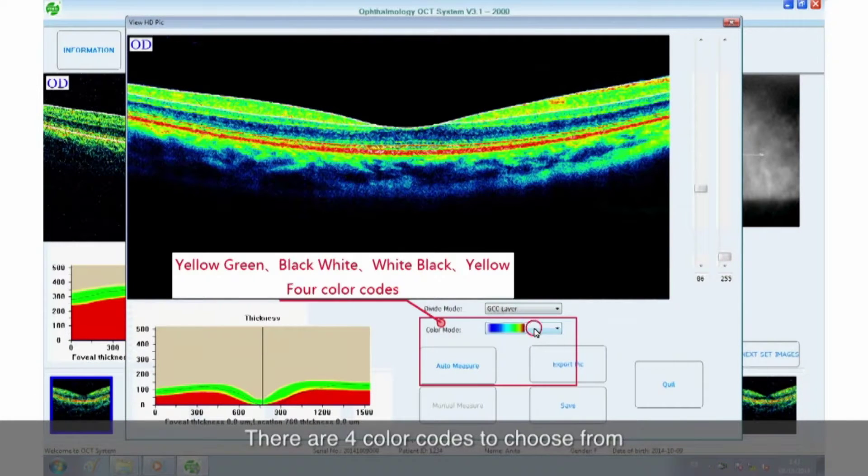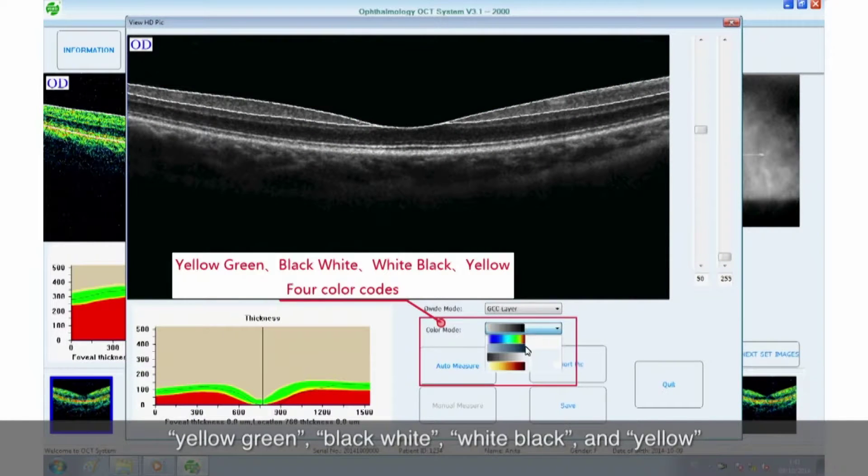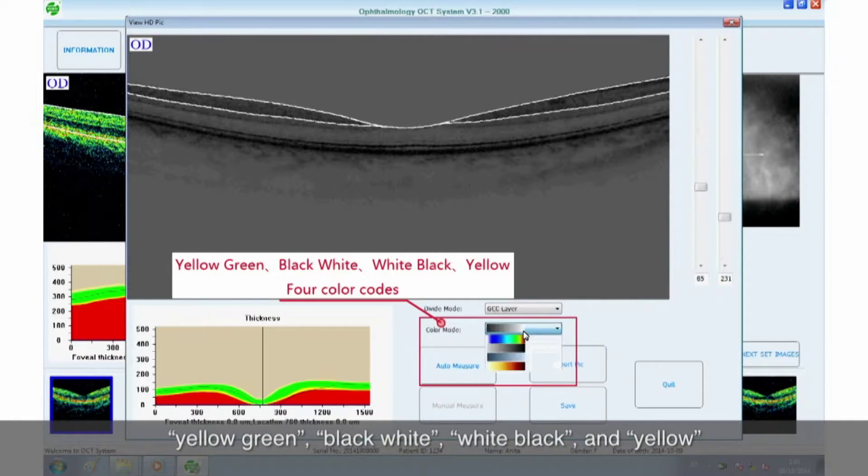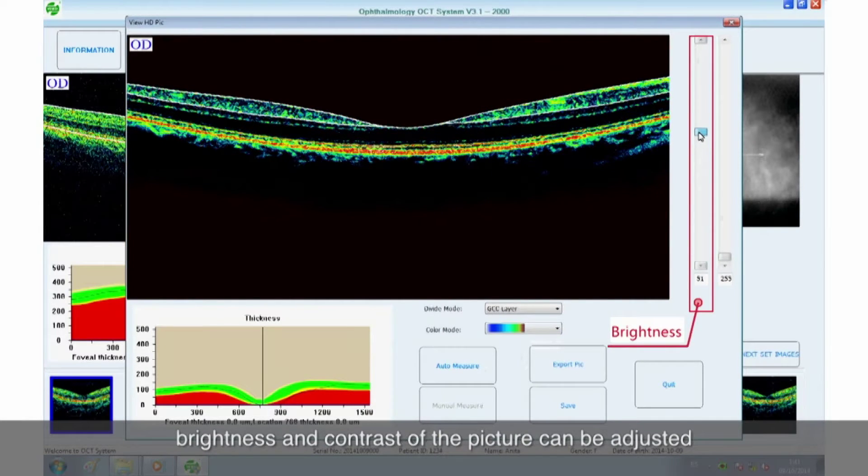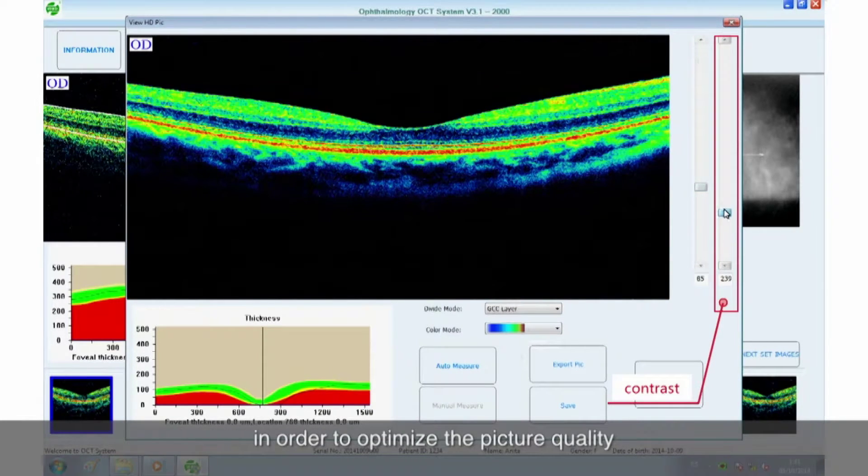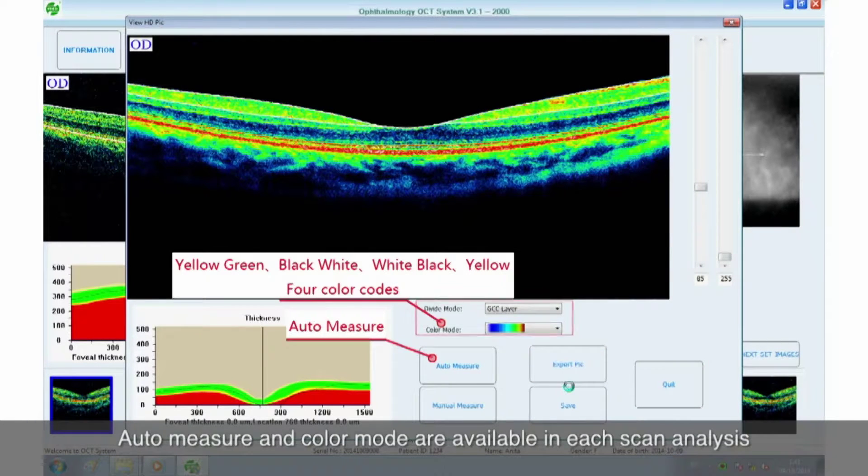There are four color codes to choose from: Yellow-green, black-white, white-black, and yellow. Meanwhile, brightness and contrast of the picture can be adjusted in order to optimize the picture quality. Auto-measure and color mode are available in each scan analysis.